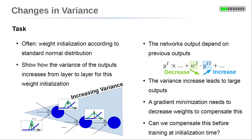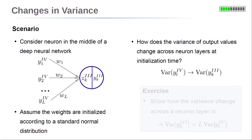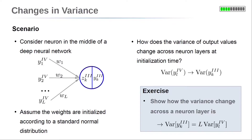This will lead to faster convergence because we start at a more appropriate point in parameter space. We consider a neuron in the middle of a deep neural network — exemplarily, this is in layer number 3. We will calculate how the variance of the output values of this layer is related to the variance of the outputs of the preceding layer, layer number 4. We will prove that the variance in layer 3 is equal to the number of incoming neurons, capital L, times the variance of these inputs at time of initialization. We will assume that the weights are distributed according to a standard normal distribution.